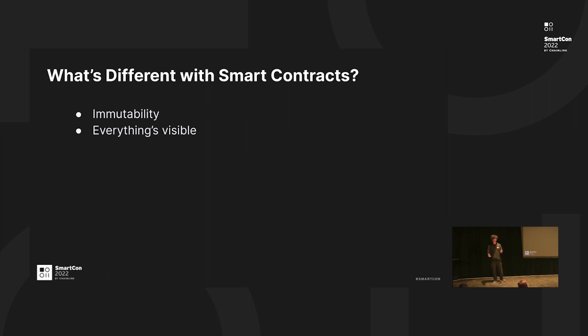The second difference is that everything's visible. If a hacker wants to hack your smart contract, he can look at everything — ranging from the storage values and the code and everything.